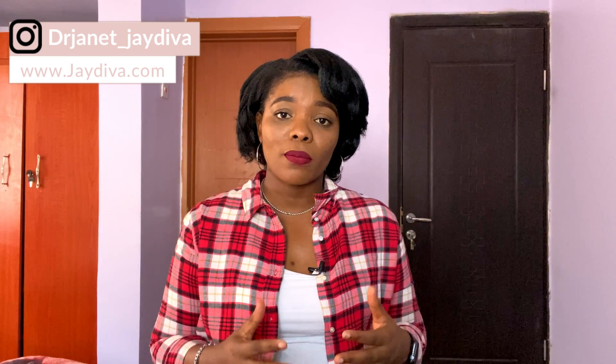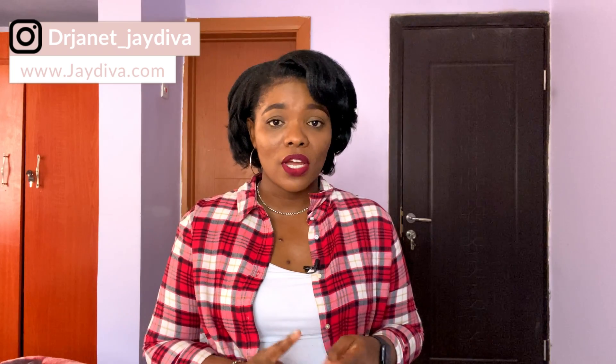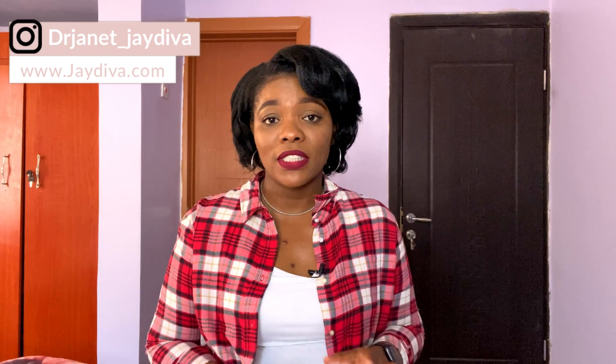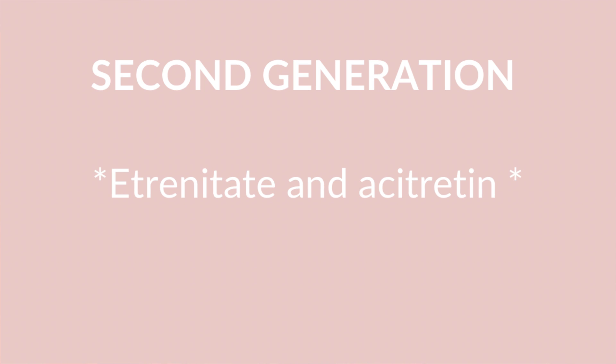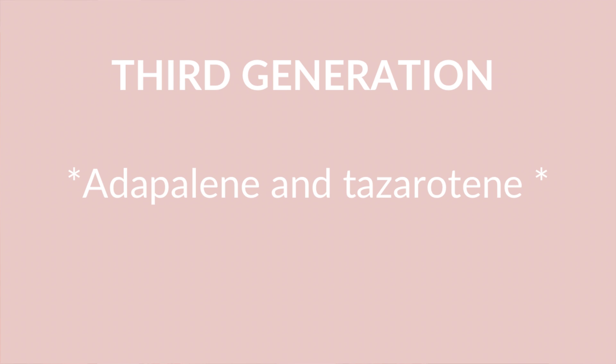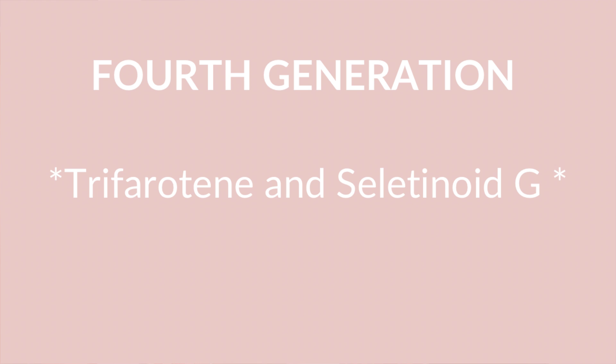Based on their structure and when they were discovered, retinoids can be broadly classified into four major generations. The first generation includes retinol, retinaldehyde, tretinoin, isotretinoin, and alitretinoin. The second generation includes acitretin. The third generation includes adapalene and tazarotene. The fourth generation has trifarotene and seletinoid G.